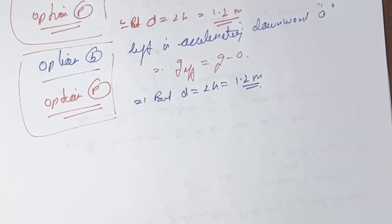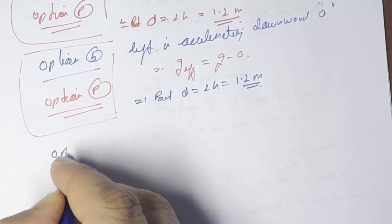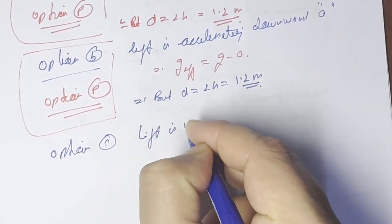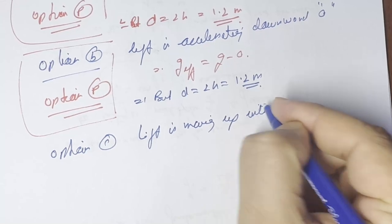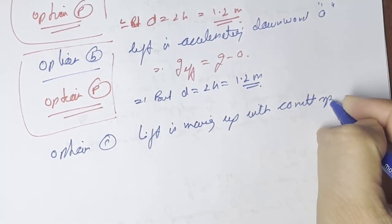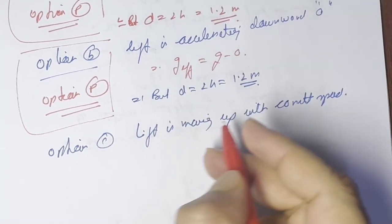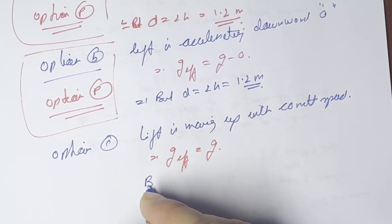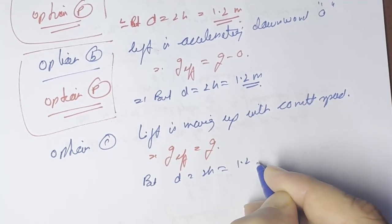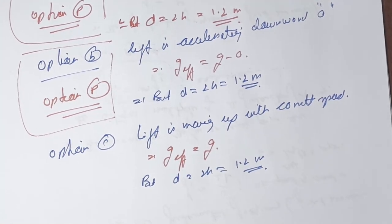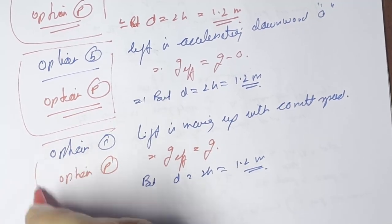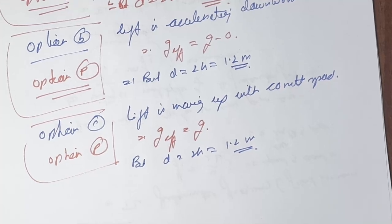Option C: the lift is moving vertically upward with constant speed. In this case, g_effective equals g. Once again, d equals 2h, which gives 1.2 meters. So option C also matches option P. Now we come to the last part: the lift is falling freely.